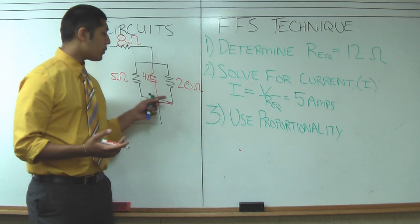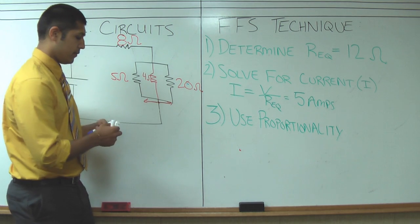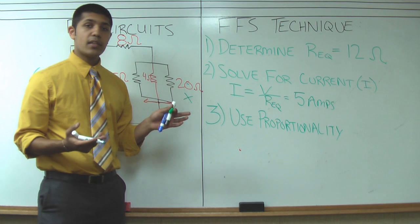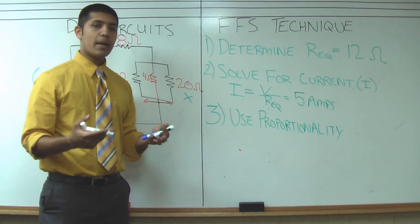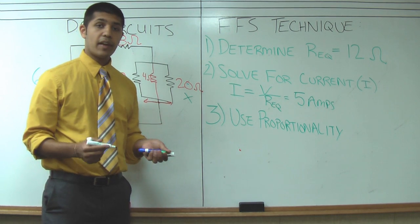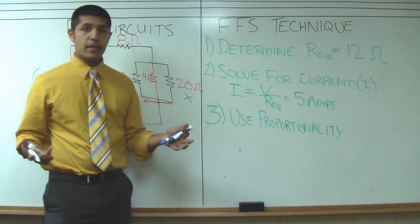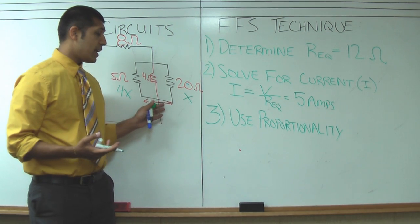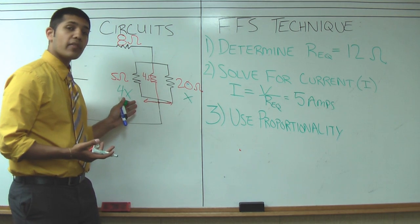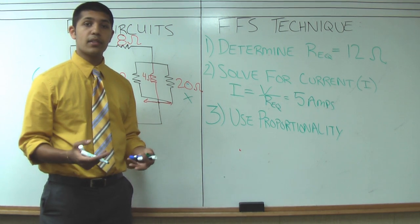The way we do this is we assign the largest resistor the value x. And then we take the smaller resistor and we determine how many times smaller is it? Well 5 is 4 times smaller than 20 so it's going to get a value of 4x. Alright, now schematically this represents that if an x amount of electrons goes towards the right 4x amount of electrons are going to go towards the left. That should equal all of the electrons available in the circuit.